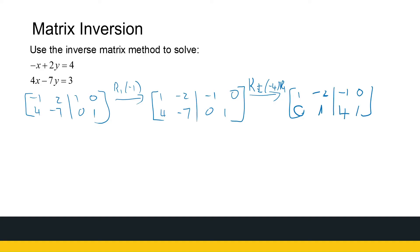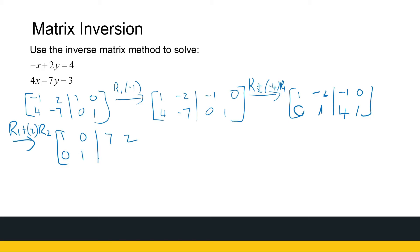We've got our leading one, so now we want a zero above it. We take row one and add two times row two to it. That gives us: one, zero in the first two entries. Then four times two is eight, minus one is seven. One times two is two, plus zero is two. Row two stays the same.